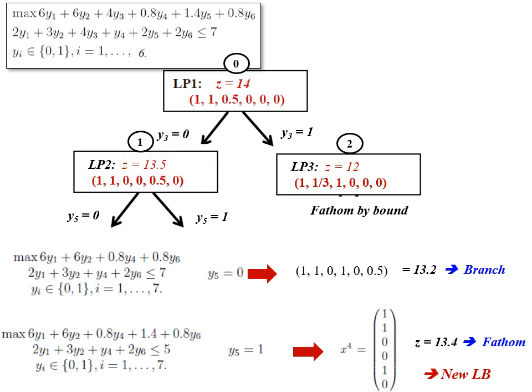Returning to the open nodes: we had decided to branch node one on y5, creating two child nodes. We also have the remaining open node from the root. According to breadth-first search I select from the highest level. The two children of node one (y5=0 and y5=1) are at the same level, so I select one of them — let's pick the y5=0 branch and number it node three.